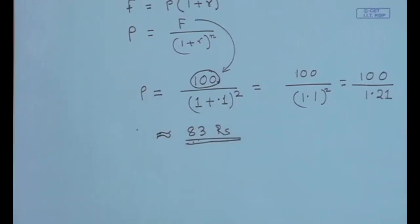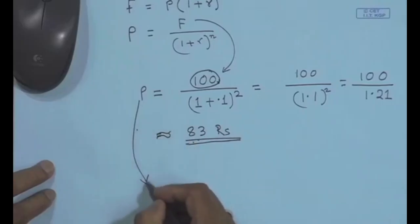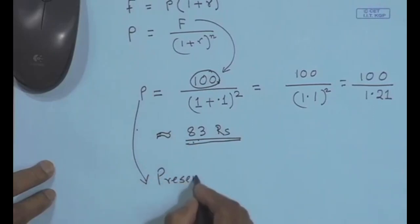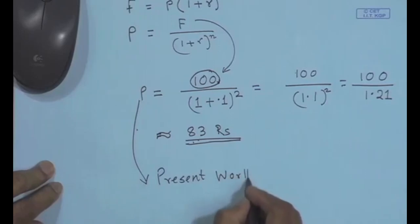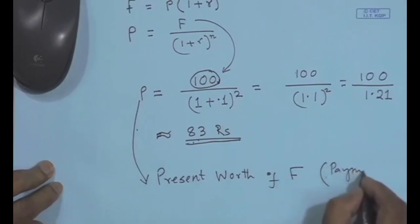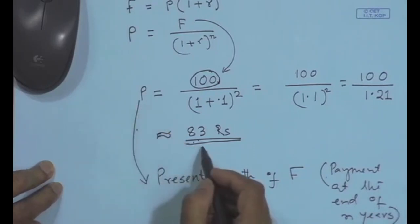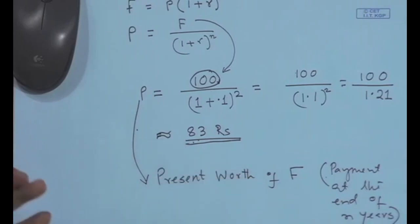That is why the word 'discounted' is used, and the process of finding the present worth of future cash flows is generally known as discounting. This is called the present worth of a payment F at the end of n years. It is the present value — present value is less — and this is the process of discounting.